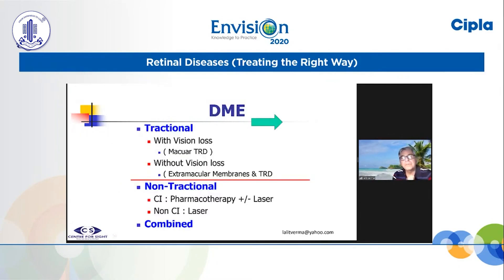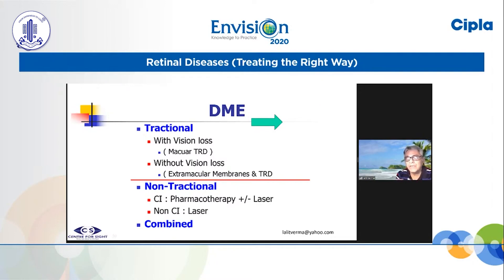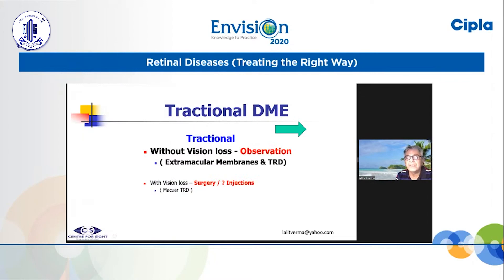From the information available of vision, FA, and OCT, I try to classify these patients as tractional DME or non-tractional. Within tractional, it is either macular traction or extra-macular traction. Within non-tractional, depending on extrafoveal or foveal leakage, we decide on pharmacotherapy, laser, or sometimes combined treatment.